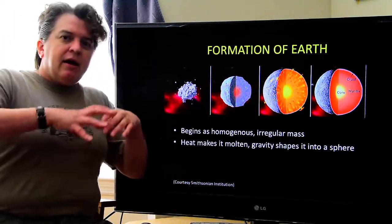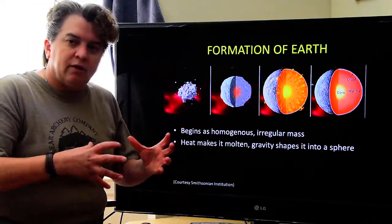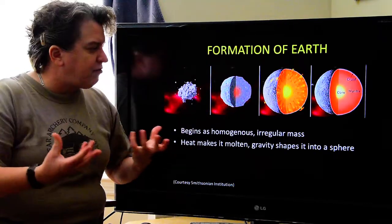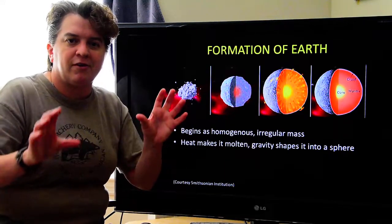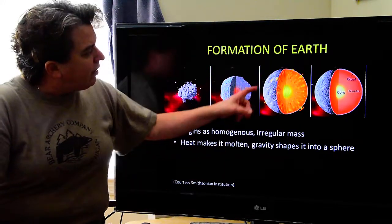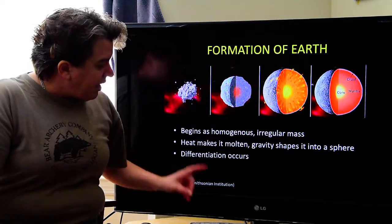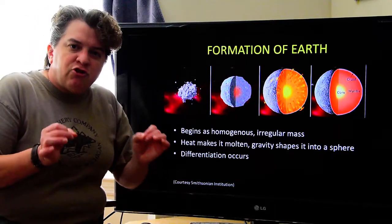But, it gets hot. And heat makes this molten. And when Earth is molten, everything's tugged towards the center. So, the planet gets shaped roughly into a sphere. Yes, I know it's not a perfect sphere, but it's close enough for government work. And so, it gets shaped into a sphere by gravity. And, since it's molten, differentiation can occur.